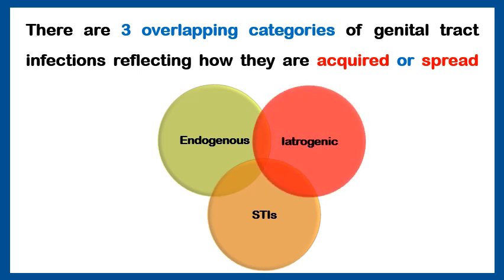There is a third way which we call iatrogenic. It means induction of infection by using unsterilized or not well-sterilized instruments. For example, inserting an IUD for a female or treating erosions or any intervention through the vagina might transfer infection from the lower genital tract to the upper genital tract, resulting in uterine infection or tubal infection.